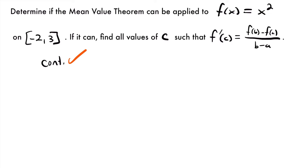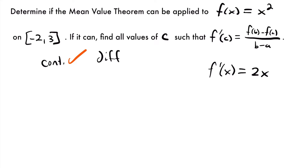And then if we want to check differentiability, all you have to do is take the derivative and see if the derivative is continuous on this interval as well. So the derivative of x squared, or f prime of x, is going to be equal to 2x, using the power rule. And just like x squared, 2x is a monomial or a polynomial with one term, which means it is going to be continuous everywhere. So since the derivative is continuous on this interval, we can say that our original function is differentiable on the interval.